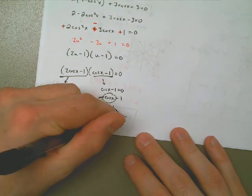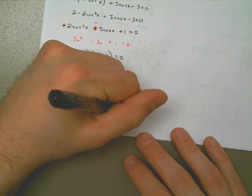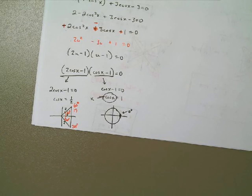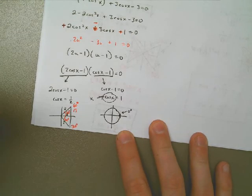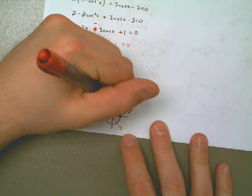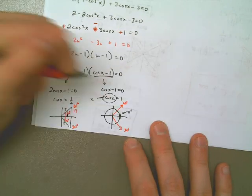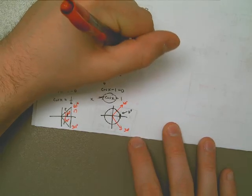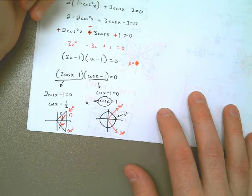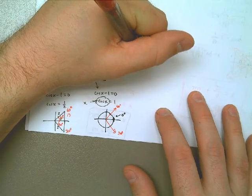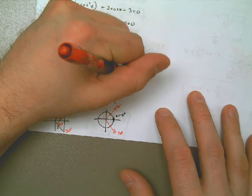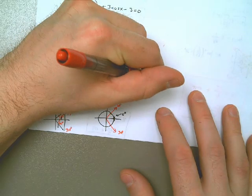I also have the infinite solutions to take care of. Drawing all three angles — 60 degrees, 0 degrees, and 300 degrees — no straight line forms up. That means I have three separate answers, each going up in multiples of 2π. The answers are: 2πn, π/3 plus multiples of 2π, and 5π/3 plus multiples of 2π. That's the answer to this problem, since it said 'solve' — meaning an infinite number of solutions.